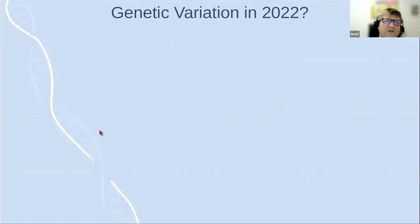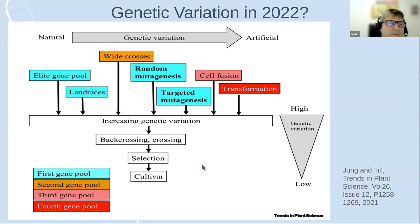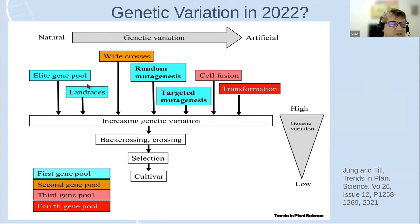Now putting this in context: this older method of induced mutations combined with reverse genetics — using mutations for roughly the last 20 years — how does this fit with genetic variation in 2022? This is from a review paper Christian Jung at Christian Albrecht's University in Kiel and I wrote about a year ago. The plant scientist today has many sources of genetic variation — landraces, wide crosses, transformation, cell fusion — but I want to focus on random mutagenesis versus targeted mutagenesis like CRISPR.